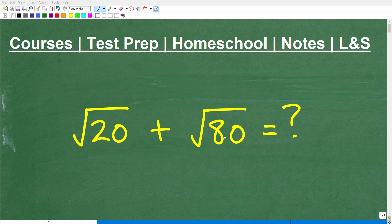Okay, let's go ahead and add these square roots together. So here I have the square root of 20, and let's go ahead and add this to the square root of 80.